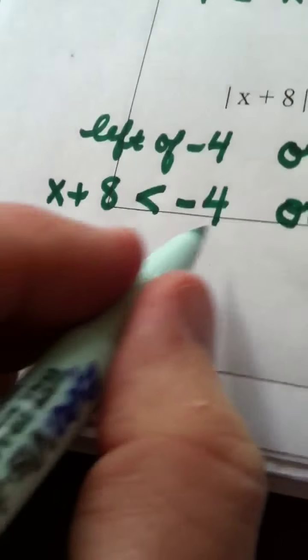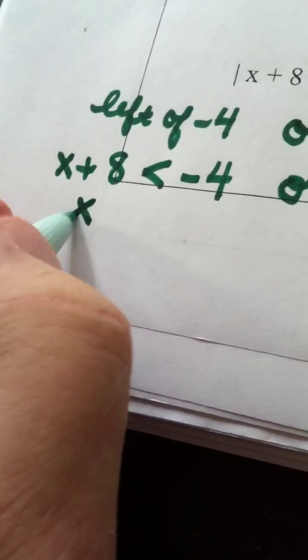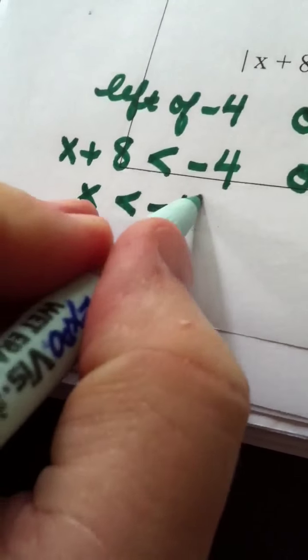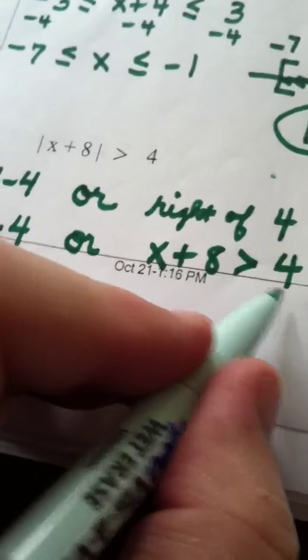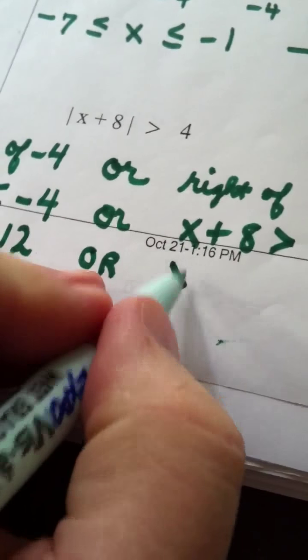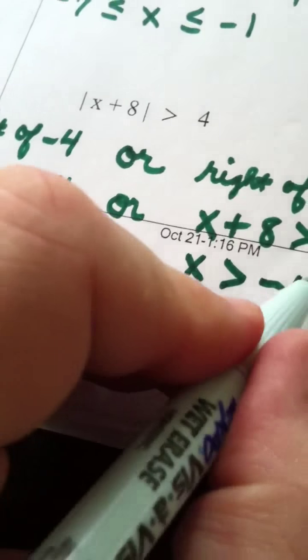When I solve this first case by subtracting 8 from both sides, x is less than negative 12. The word or is still here. When I subtract 8 here, I get x is greater than negative 4.